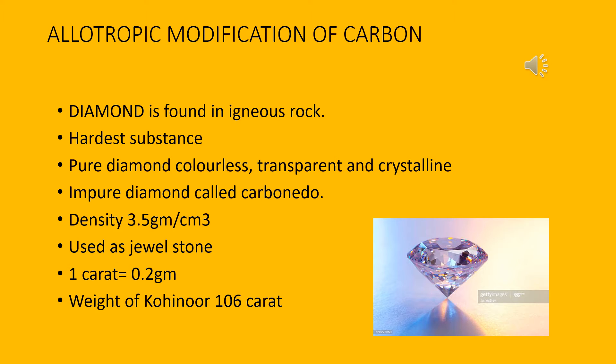Scientist Moissan first artificially prepared diamond. In an electric furnace, a mixture of iron and carbon is heated at 3000 degrees Celsius and it is suddenly cooled by pouring it into molten lead (Pb). At 327 degrees Celsius, sudden cooling and squeezing results in the change of carbon to diamond.